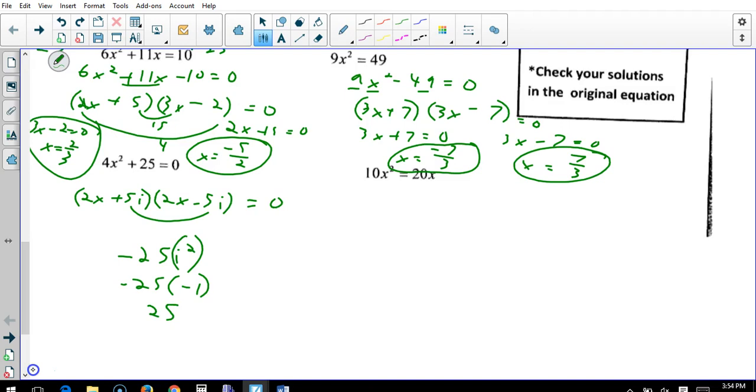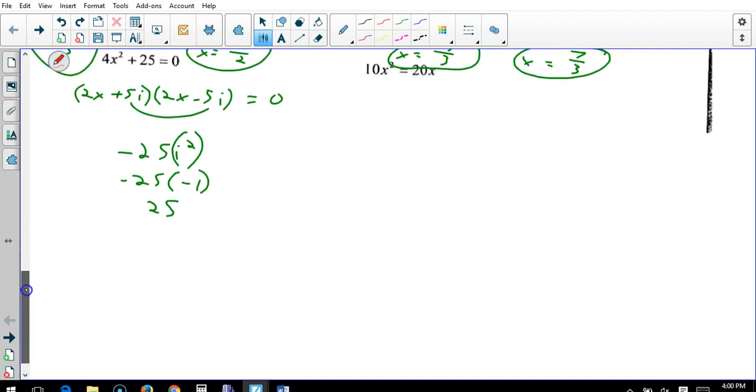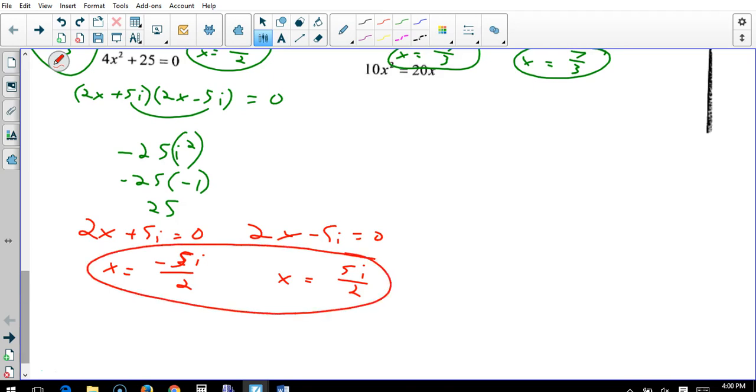So when we have a sum of two squares, we do the same thing as with the difference of two squares, except we add an i to each of these second terms. And it works out. So now that we have these two, we're just going to set them both equal to 0. 2x plus 5i equals 0 and 2x minus 5i equals 0. We're going to move 5i over, so x equals negative 5i over 2. And this one, x equals 5i over 2, or 5 halves i.